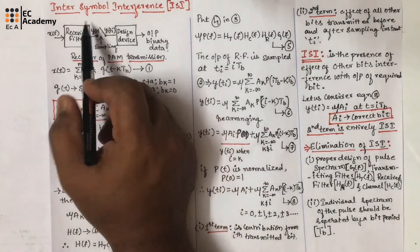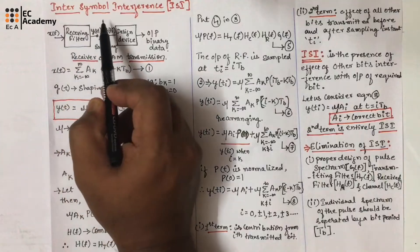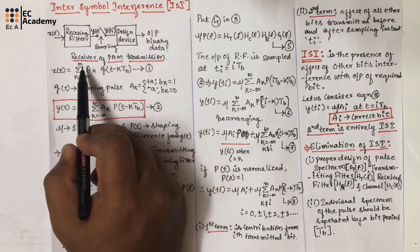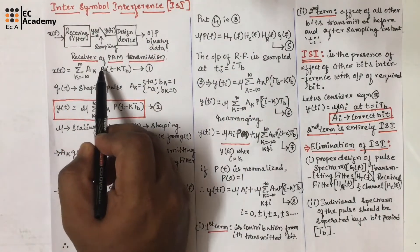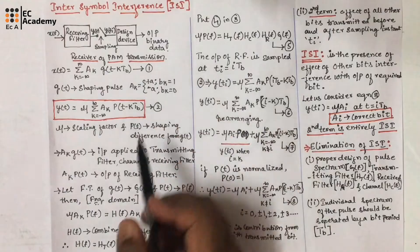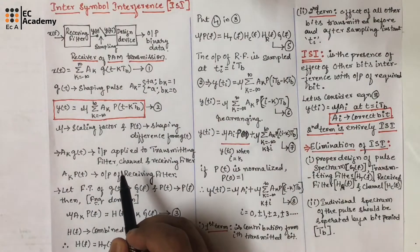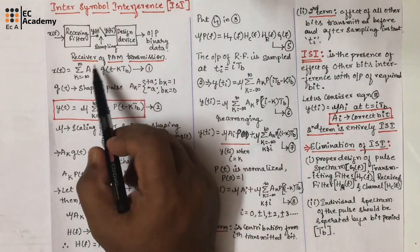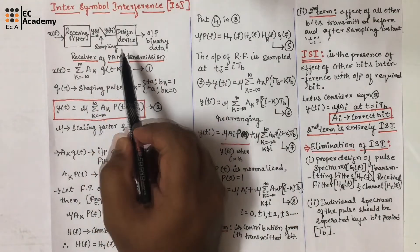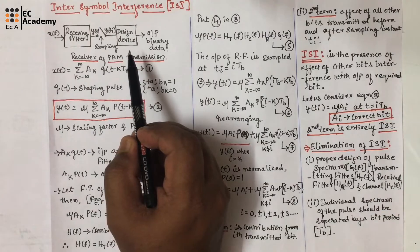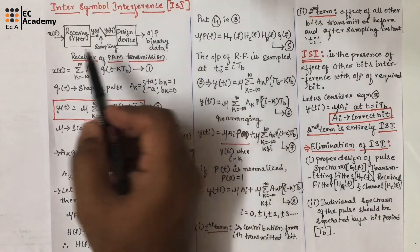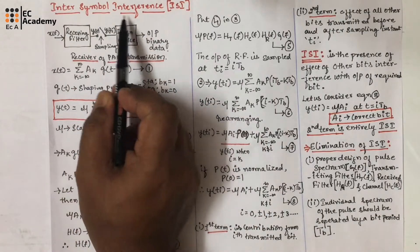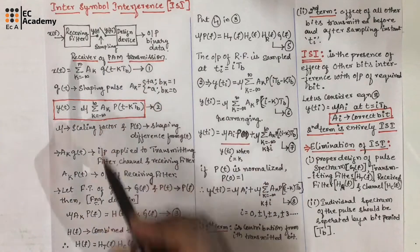To understand the concept of inter-symbol interference, let us consider the receiver part of the PAM transmission. In the previous lecture, we understood the PAM transmission. From that block diagram, we are just considering the receiving section of PAM transmission.